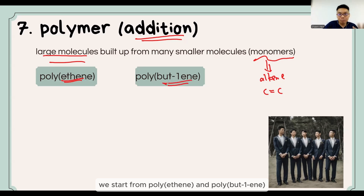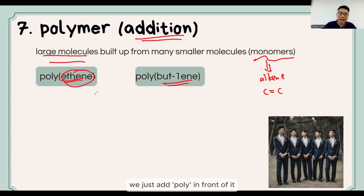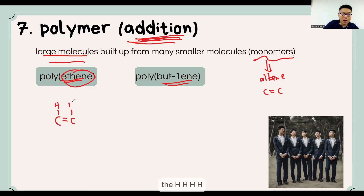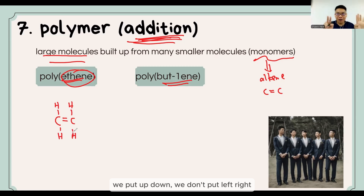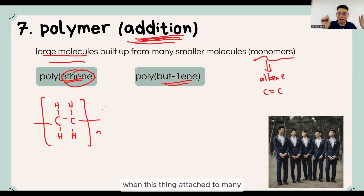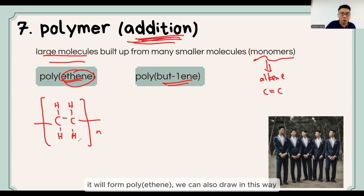The monomer is the alkene. When the alkene monomers join together, we just add 'poly' in front of the name. For ethene: ethene is C=C. When we draw it for addition polymerization, we only put other atoms above and below the C=C — the hydrogens go up and down, not left and right, because the middle must remain the C=C. When they form a polymer, the double bond loses one bond and joins with the next unit on each side.